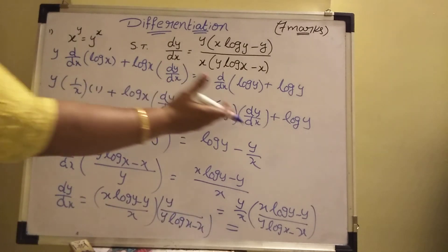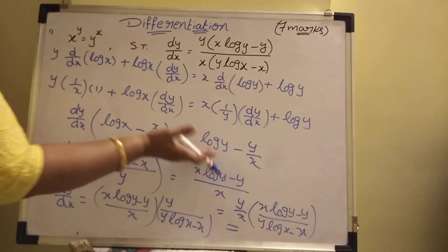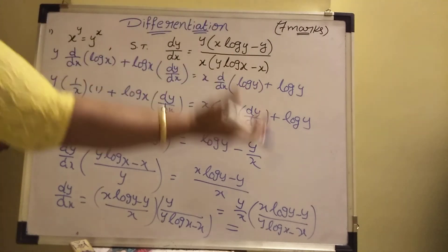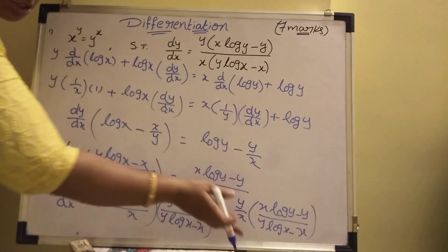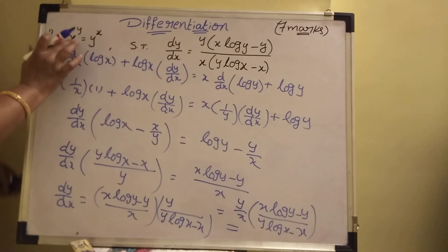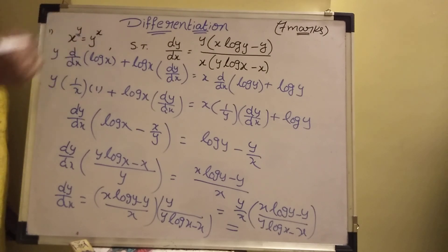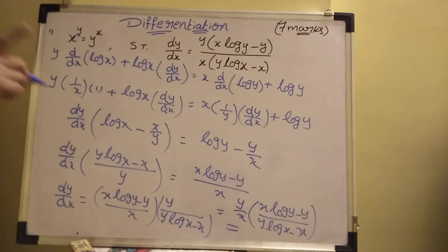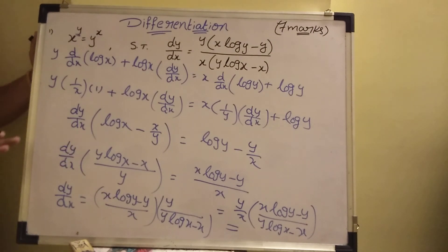You should collect dy by dx terms, send them to one side, take LCM, and you will get the answer. It is easy. Seven marks sums — there are minimum eight to nine such sums using log. When power is variable, take log on both sides and it will be easy. Please subscribe to my channel and share. Thank you.